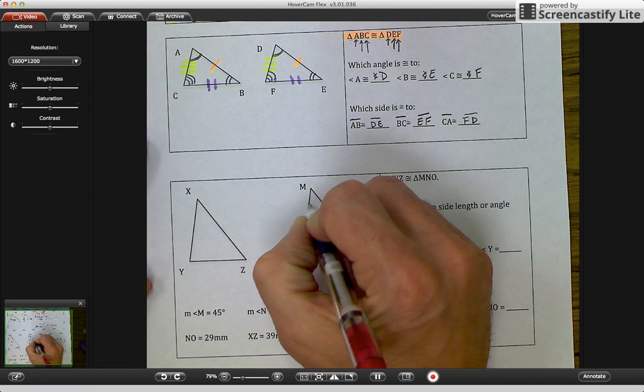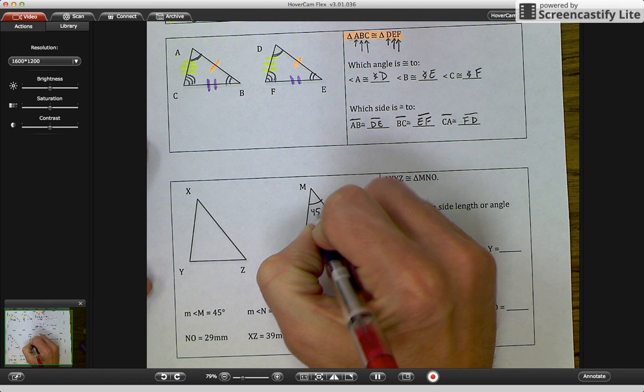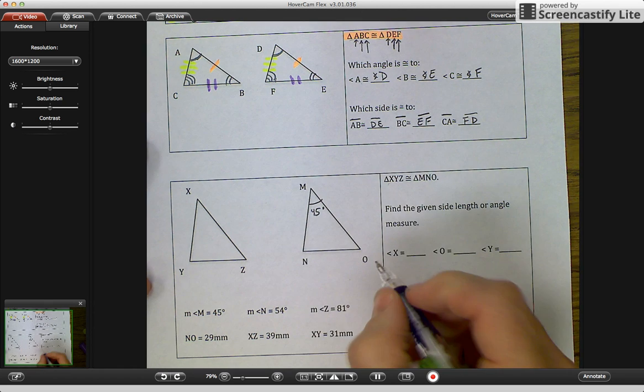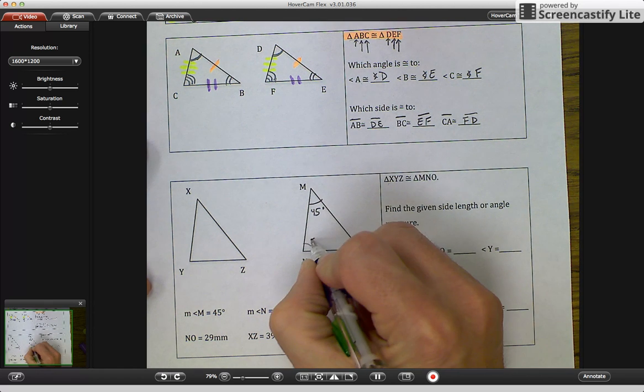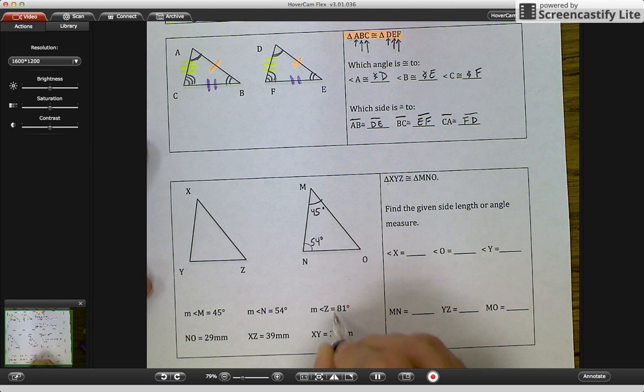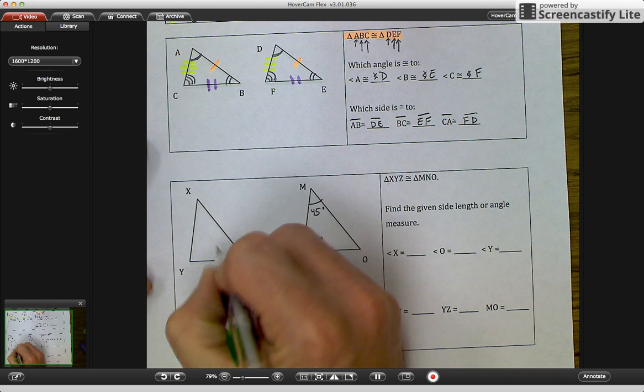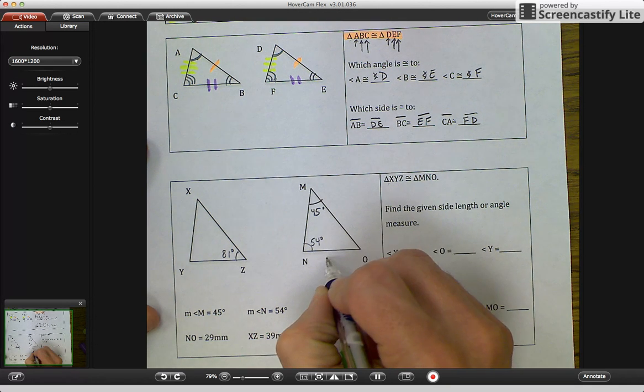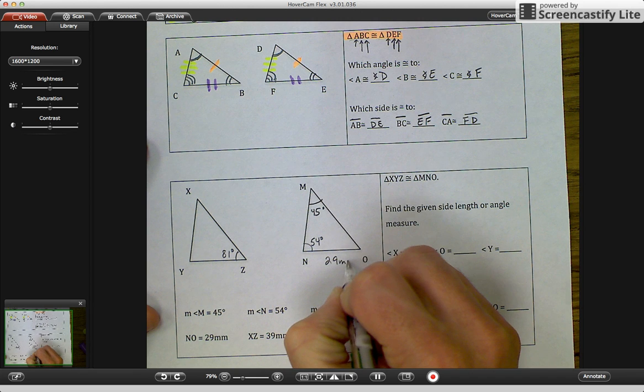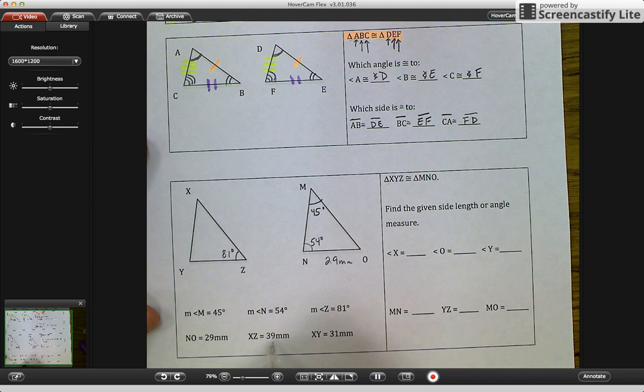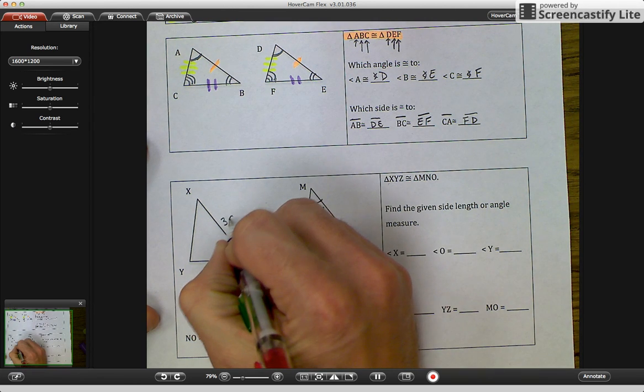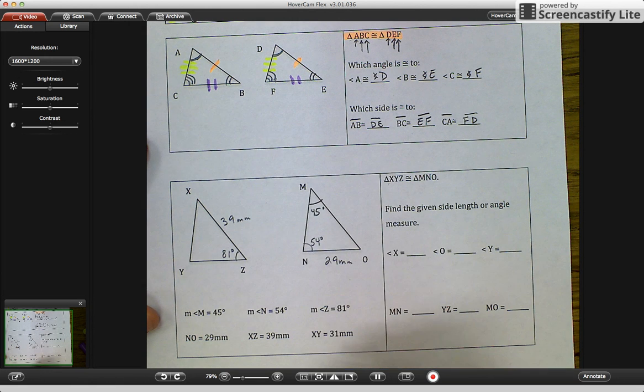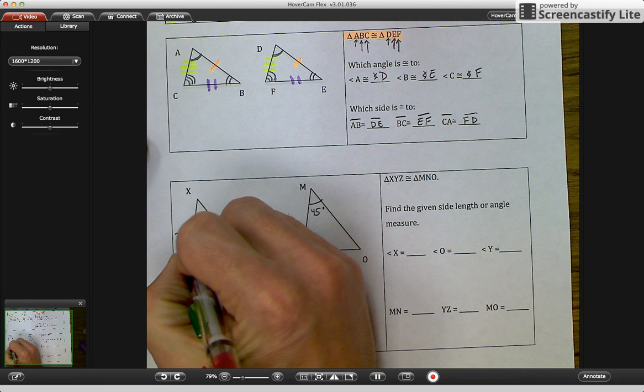So angle M is 45 degrees. Angle N is 54 degrees. And angle Z is 81 degrees. NO is 29 millimeters. XZ is 39 millimeters. XY is 31 millimeters.